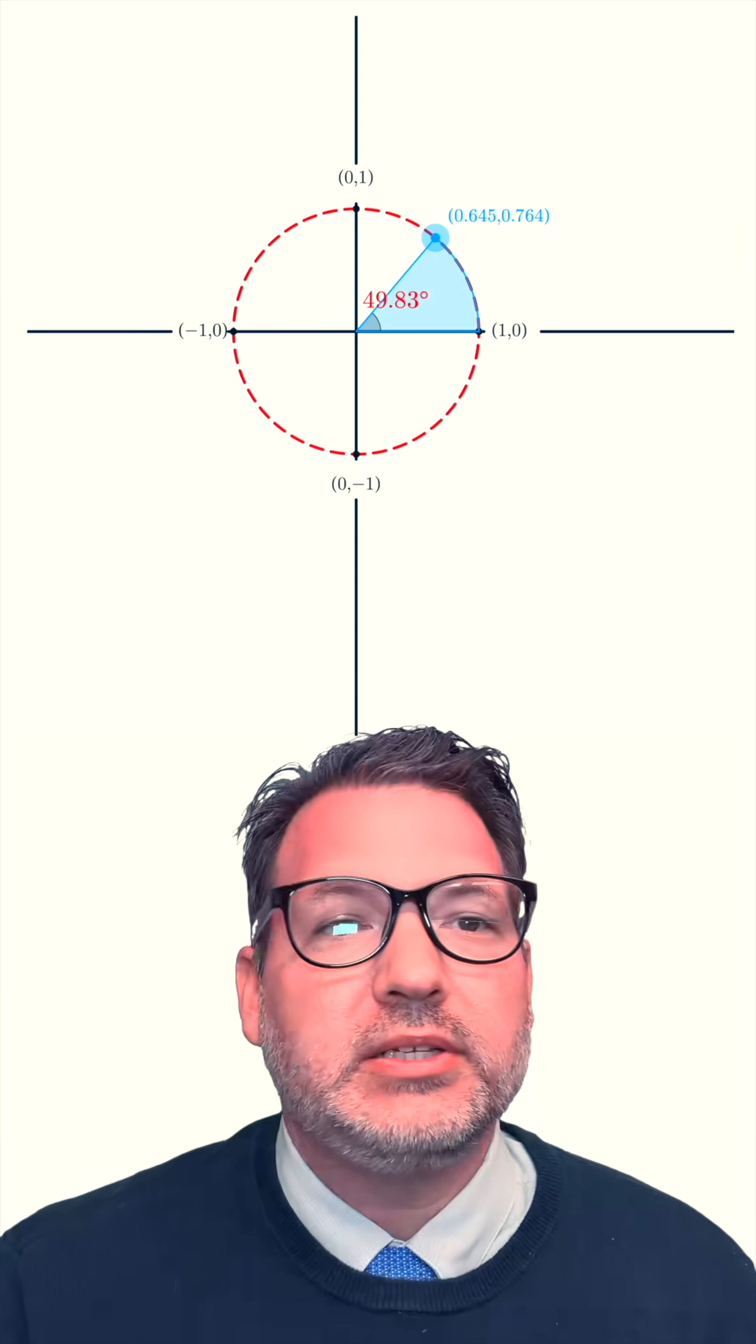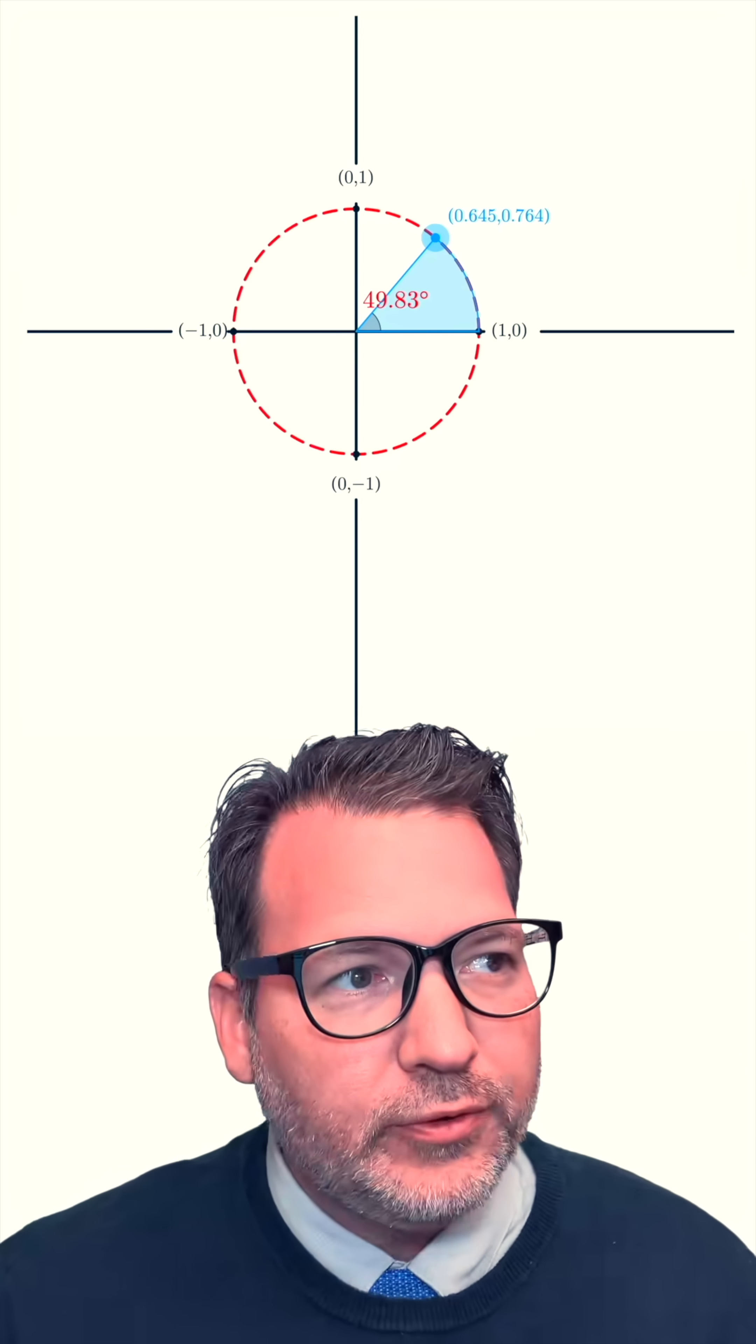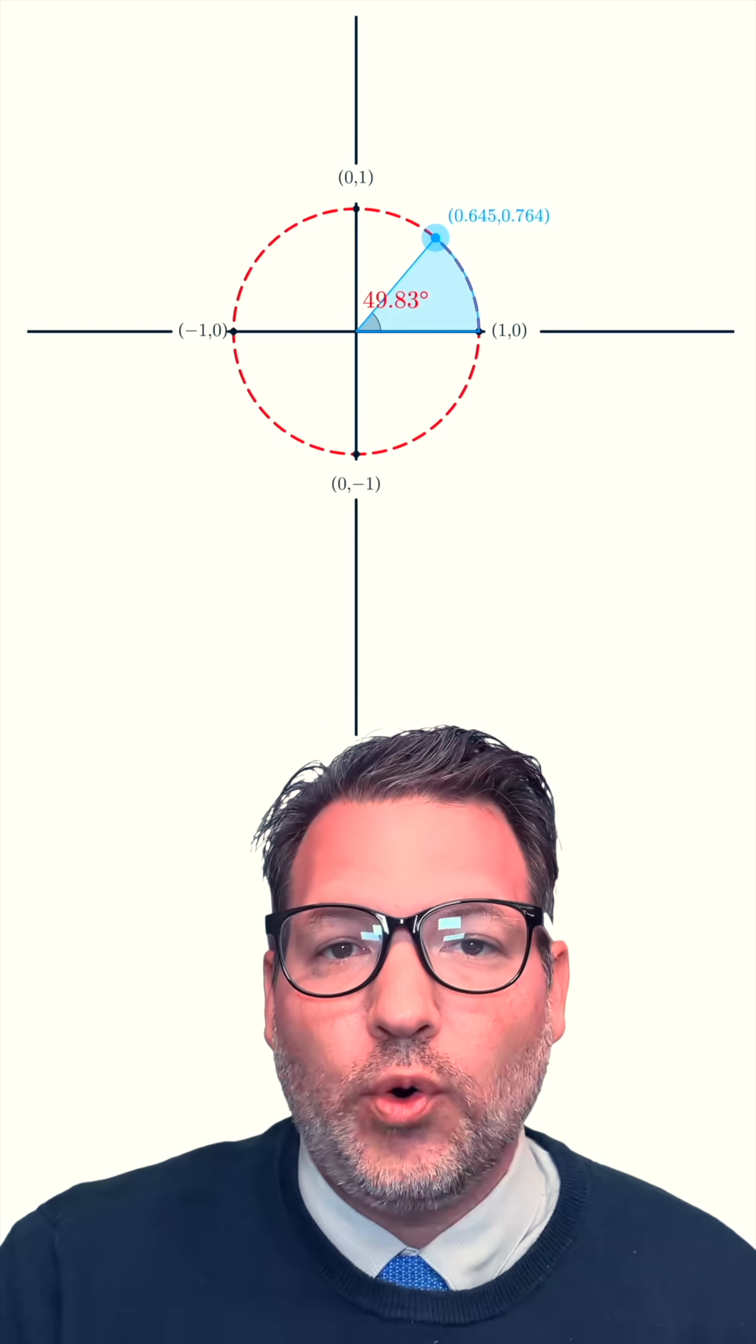We've got a circle and we've got a certain portion of that circle marked out to indicate a given angle. Right now, for example, we've got a roughly 50 degree angle. As we fill out our angle all the way to the edge of the circle, it's going to intersect at a particular point. In this case, we can see the ordered pair 0.645 comma 0.764.